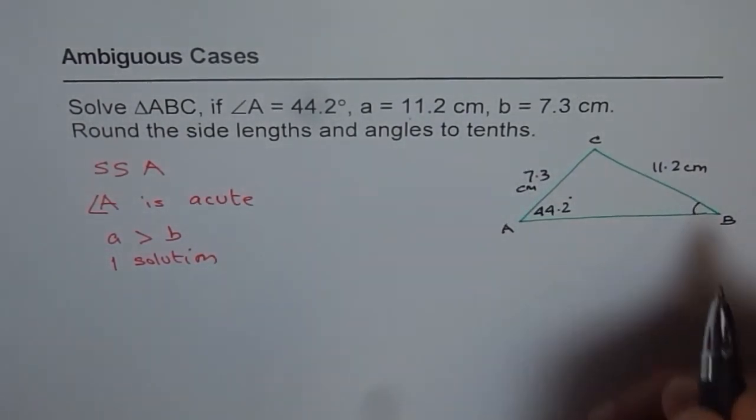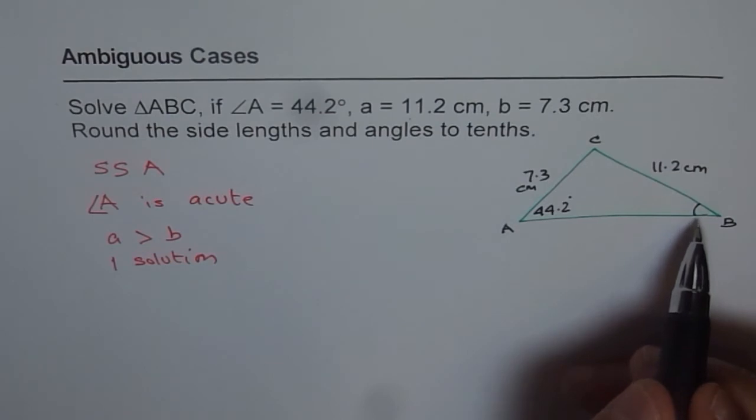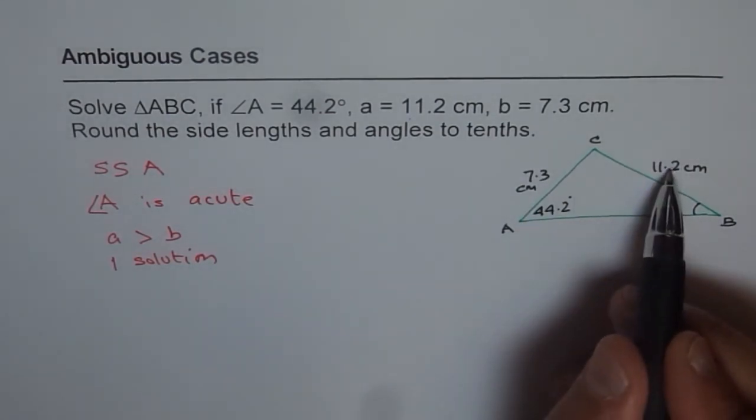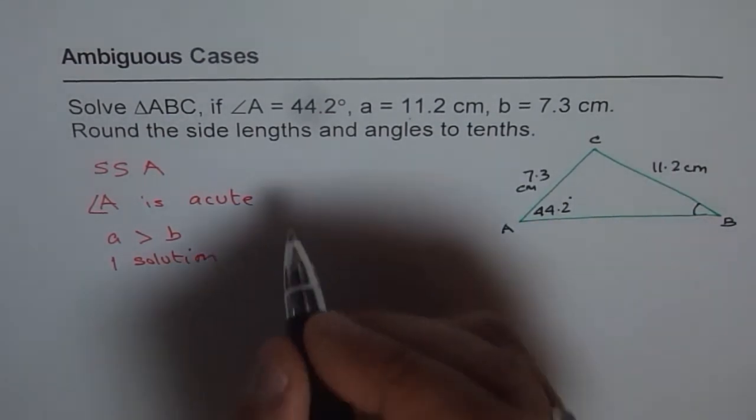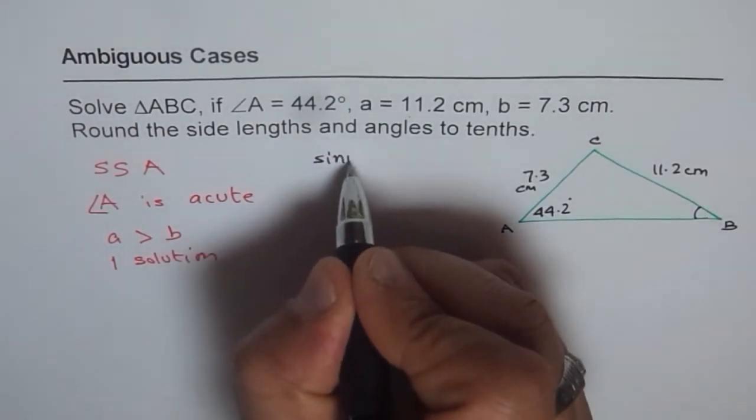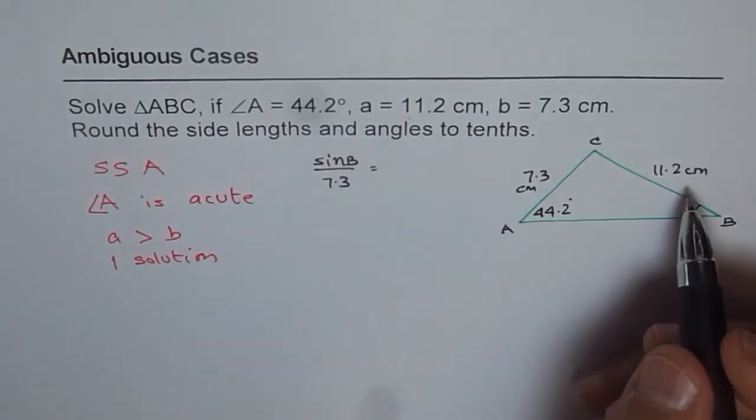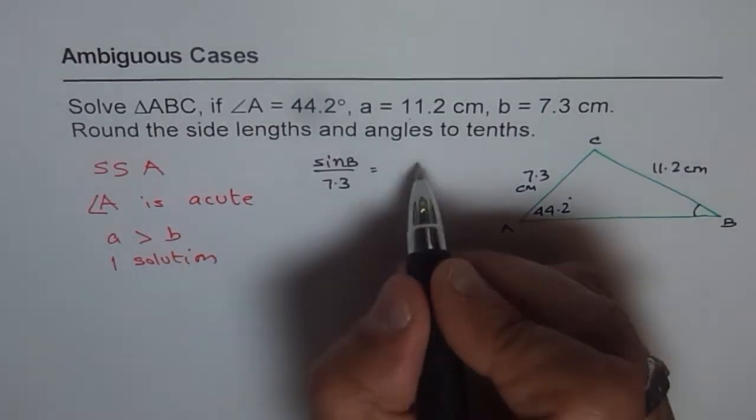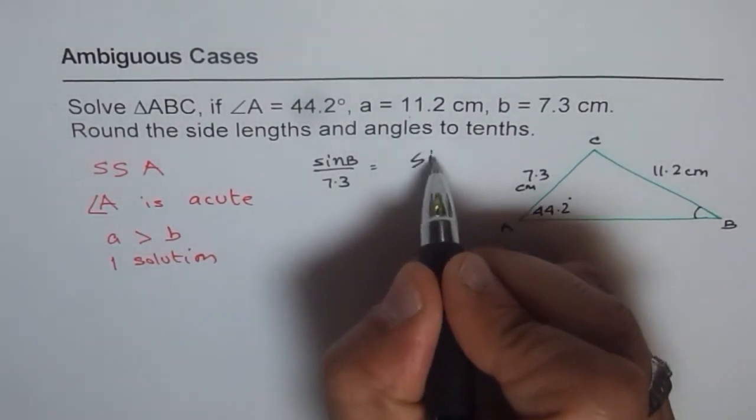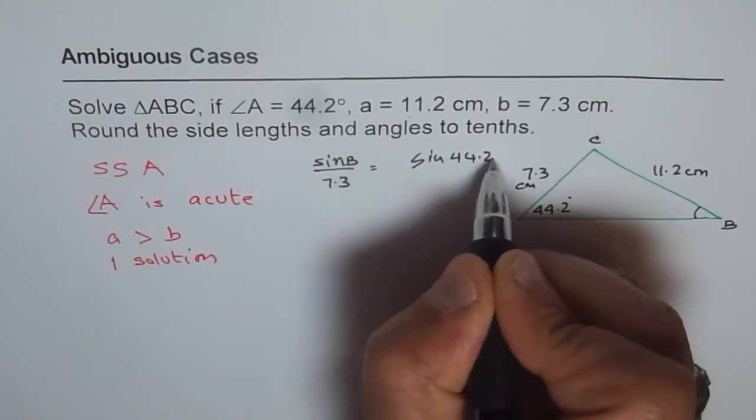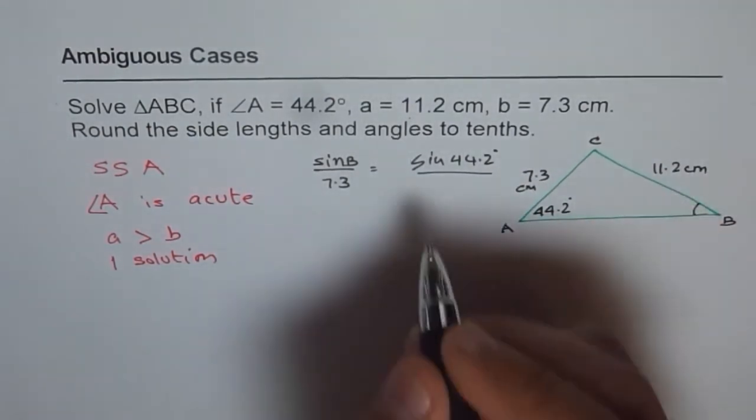Now we need to find, we should start with angle B since we know these combinations. So apply sine law. So you know sine B over side opposite which is 7.3 equals sine of 44.2 degrees over 11.2.